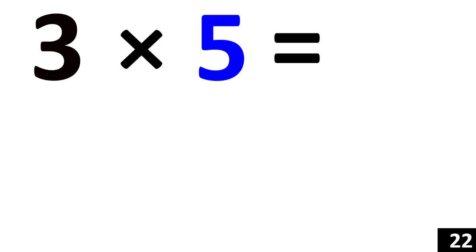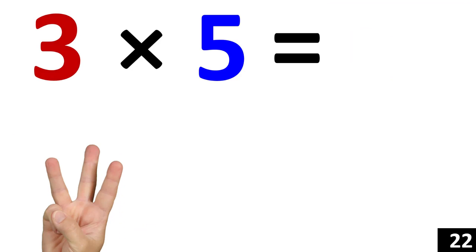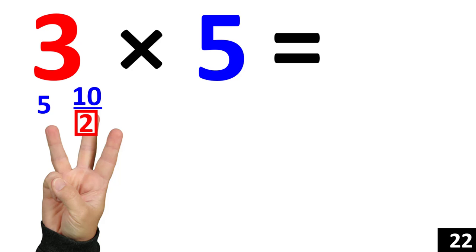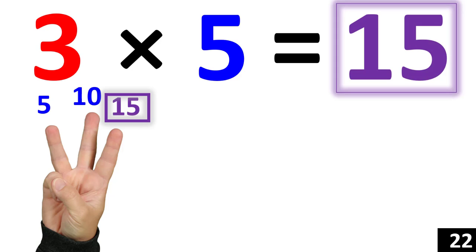3 times 5 is the same thing as counting by 5 three times. 5. 10. 15. 3 times 5 is equal to 15.